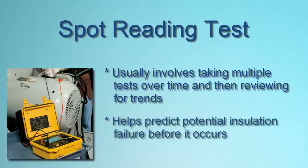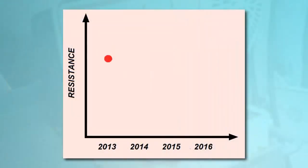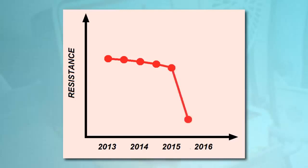This comparison can help predict a potential insulation failure in time to take corrective action. For example, suppose you perform a spot test every six months. Plotting the results on a graph, you observe a slow and gradual downward trend, as would be expected by the normal aging of insulation. However, your latest measurement reveals a sudden drop in resistance. This is likely an indication that the insulation has begun to deteriorate at an accelerated rate. To address this, you can schedule downtime for the system and take appropriate measures such as cleaning, upgrading, or replacing the insulation.